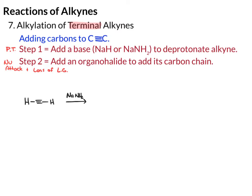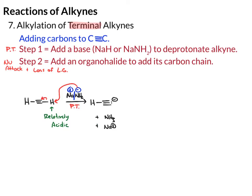I'm going to use NaNH2. When you see this, break it up: we have Na⁺ and NH2⁻. The proton on the triple bond is relatively acidic, which means this base can come and take this proton. This is a proton transfer. We end up with a lone pair and a negative charge on the end of that triple bond. If we draw our byproducts, we get NH3 and the sodium cation. Now what you should see is this carbon with a lone pair — that is a really good nucleophile.